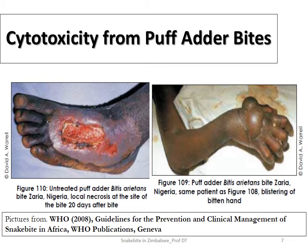An untreated puff adder bite from Nigeria showed local necrosis at the bite site 20 days after the bite. Many patients are disfigured and some suffer permanent disabilities or even amputations as a result. Though the snake may not necessarily kill you, the venom can have serious consequences if left untreated. As a general rule with cytotoxic envenomation, do not apply a tourniquet or tie anything around the bite site, as this concentrates the venom and increases the chance of losing the limb.